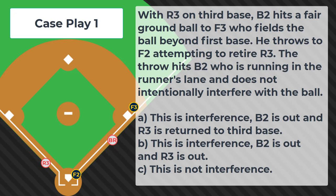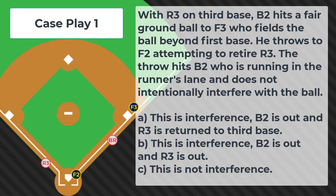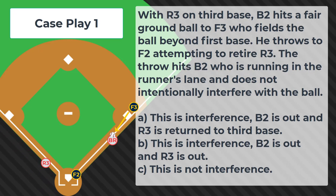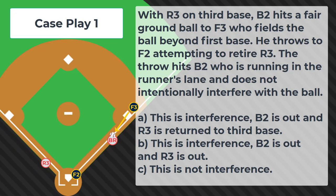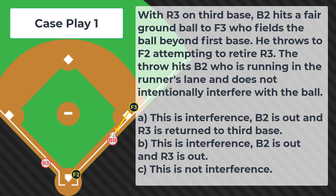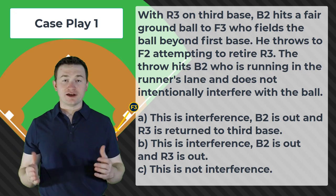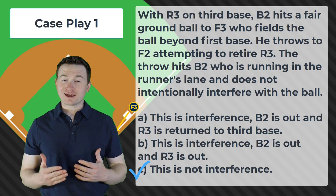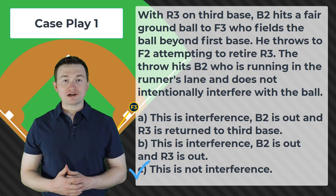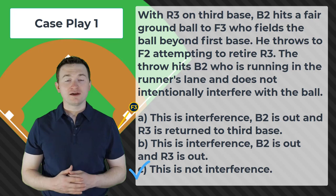Case play number one. With R3 on third base, B2 hits a fair ground ball to F3, who fields the ball beyond first base. He throws to F2 attempting to retire R3. The throw hits B2, who is running in the runner's lane and does not intentionally interfere with the ball. Is this A — interference, B2 is out and R3 is returned to third base; B — interference, B2 is out and R3 is out; or C — this is not interference? The correct answer is C, this is not interference. Because the ball is being thrown to the plate, the runner's lane has no effect on this play. So long as the runner does not intentionally try to break up the play, this is a clean play.